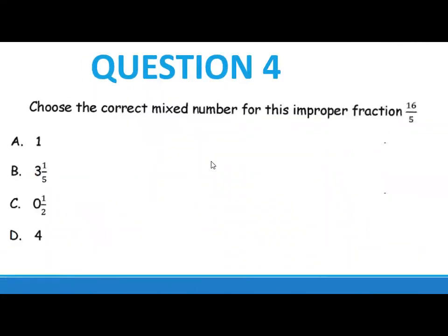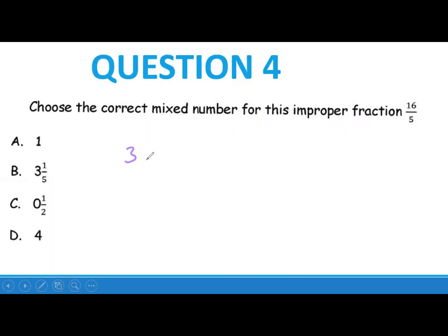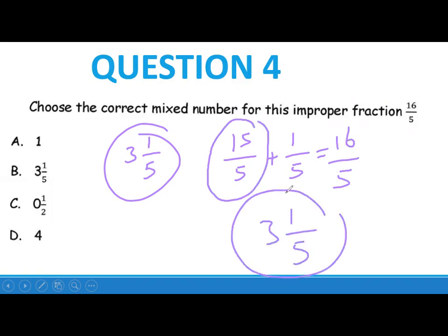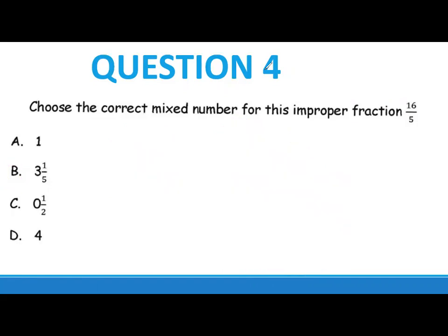Question four: choose the correct mixed number for the improper fraction 16 over 5. How many 5s go into 16? That is 3, because 3 times 5 equals 15, with 1 left over. So you can write 16 over 5 as 15 over 5 plus 1 over 5. Since 15 over 5 equals 3, the mixed number is 3 and 1 fifth. The answer is B.